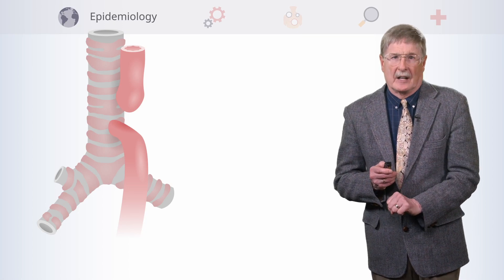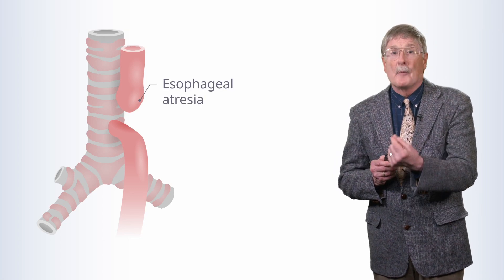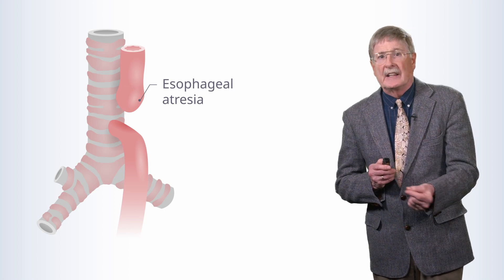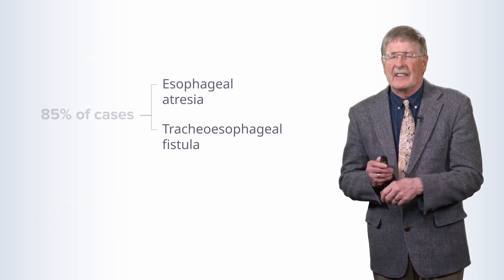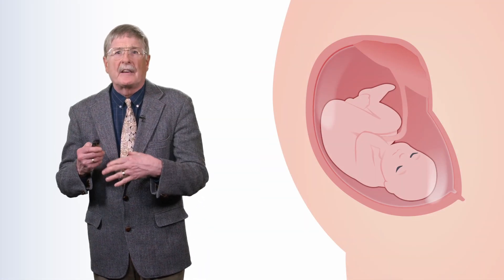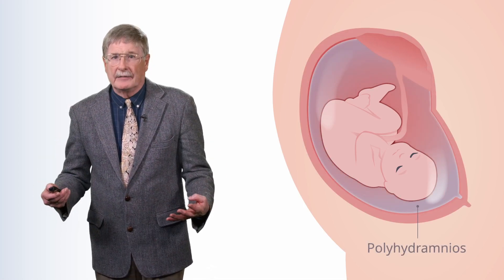This is showing the most common of the various anomalies involving the esophagus and the trachea — a combination of atresia, so that gap between the top and the bottom of the esophagus, and an associated tracheoesophageal fistula. Altogether, this particular combination occurs in about 85% of cases. When this happens, there will be developmental abnormalities secondary to the fact that the GI tract is no longer a continuous tube from top to bottom. In the absence of the fetus being able to swallow amniotic fluid and move it through the GI tract, there will be too much amniotic fluid — so-called polyhydramnios.